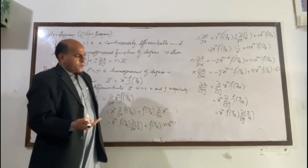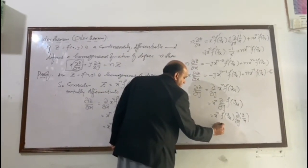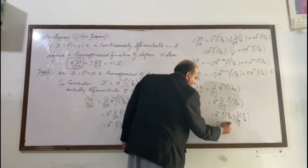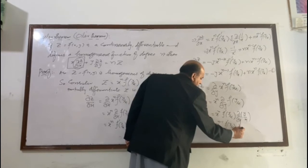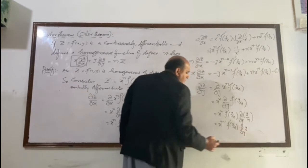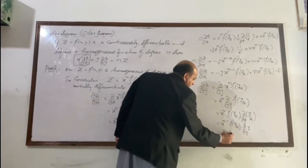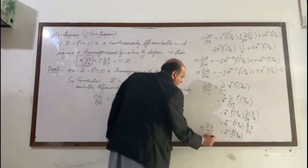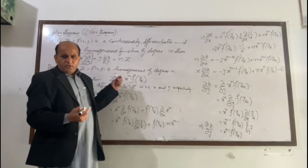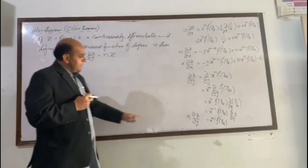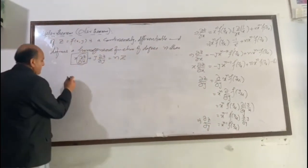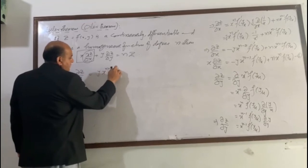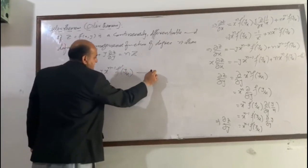Since x is a constant factor, it is taken out, giving x^(n−1). And we have f′(y/x) along with ∂/∂y of y, which equals 1. So we are left with ∂z/∂y = x^(n−1) · f′(y/x). Now, multiplying this relation throughout by y, we get y · (∂z/∂y) = y · x^(n−1) · f′(y/x). This is our second relation.